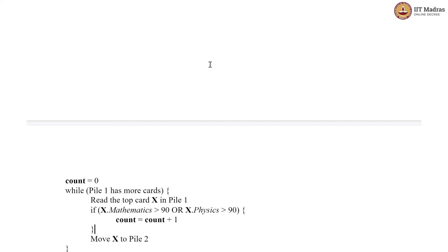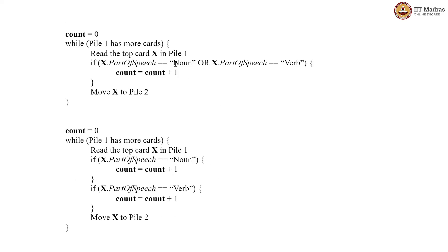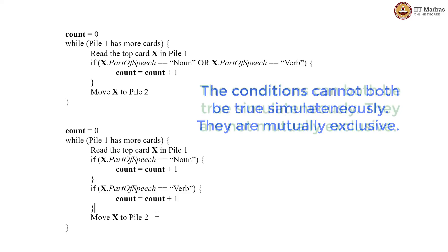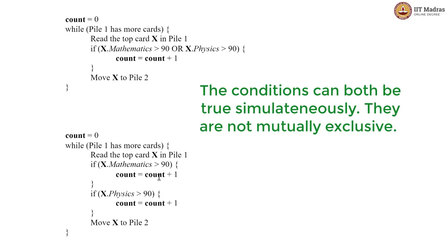The key difference is that in the noun/verb code, one card can only be a noun or a verb — it cannot simultaneously be both. In that case you can write equivalent code checking each condition separately, because if one condition is satisfied the other cannot be. They are exclusive to each other. Whereas in the scores code, the conditions are not exclusive — they can both simultaneously be true. Splitting up the if statements in that case is a bad idea because you are going to count twice instead of once.